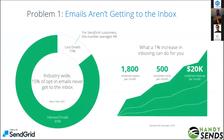Regarding Problem 1 — emails not reaching the inbox — across all inbox service providers, 15% of emails never go to the inbox; they go to spam or are not delivered. But when compared with SendGrid, on average only 4% of our customers' emails face these issues. Even a 1% increase in email deliverability can generate significant additional revenue through improved open and click rates.